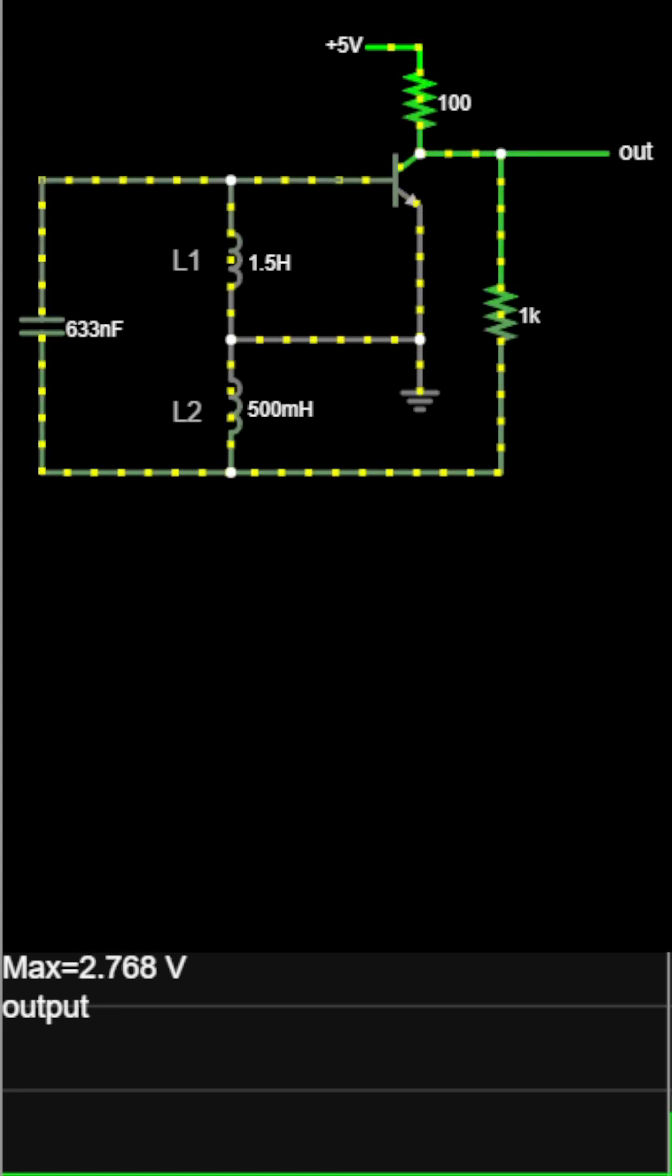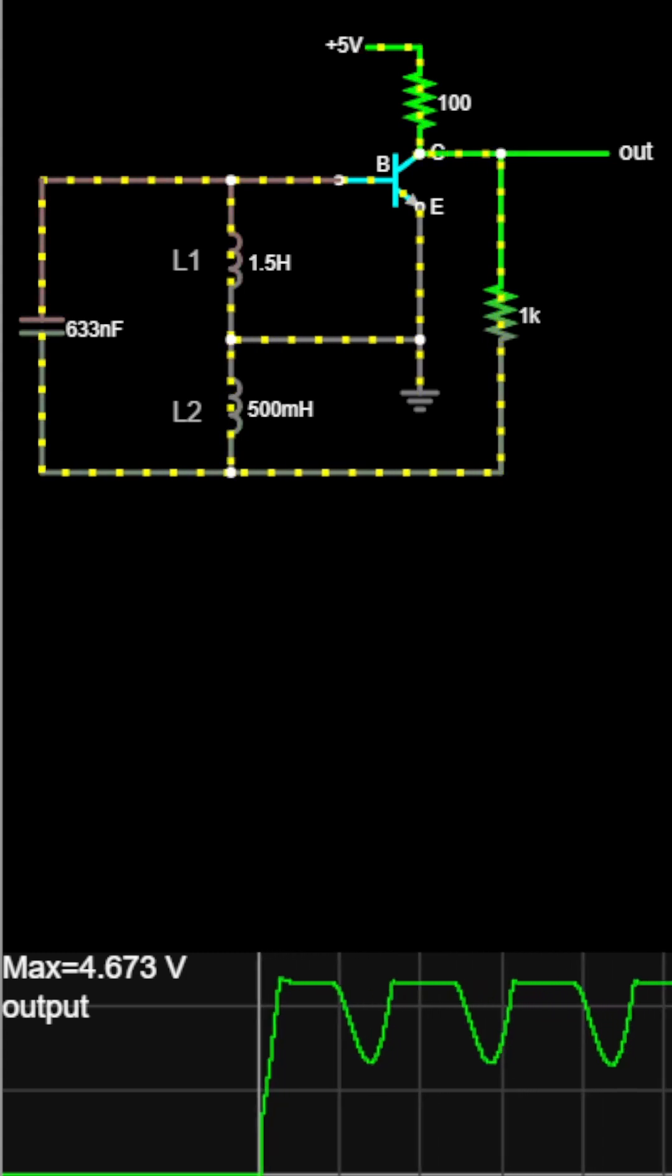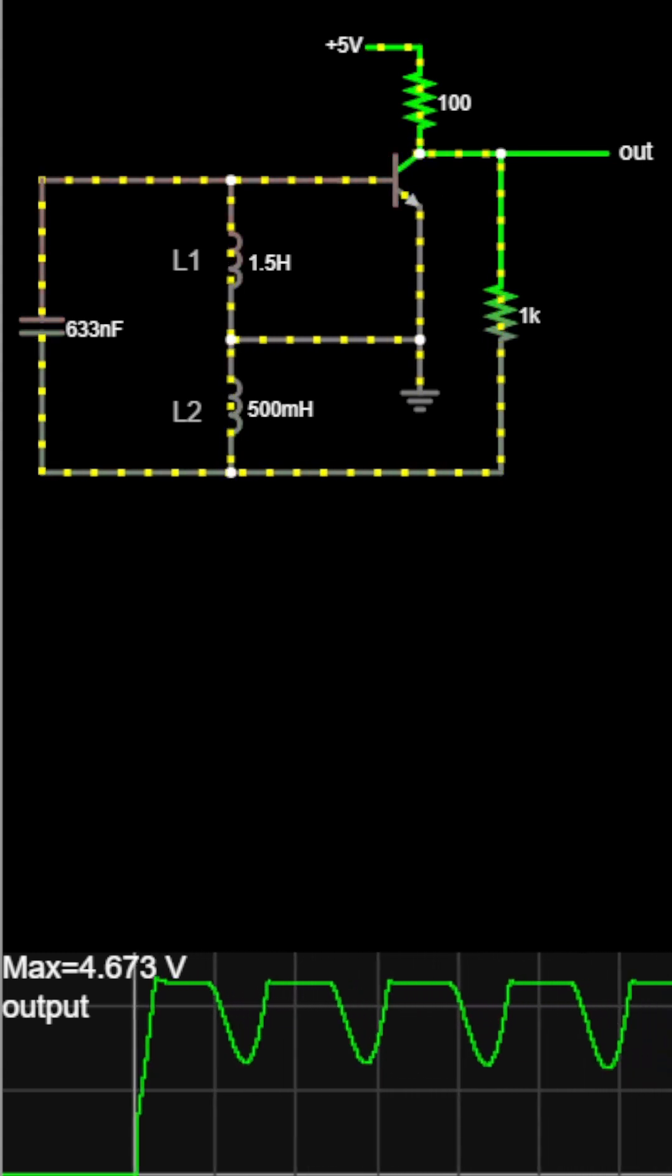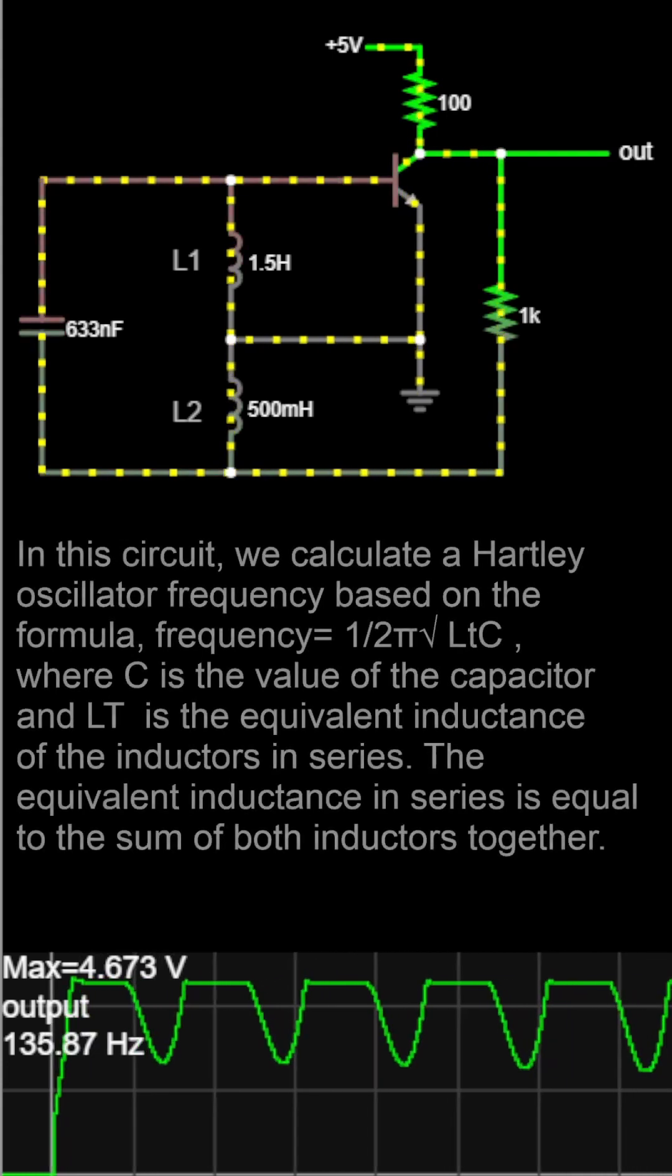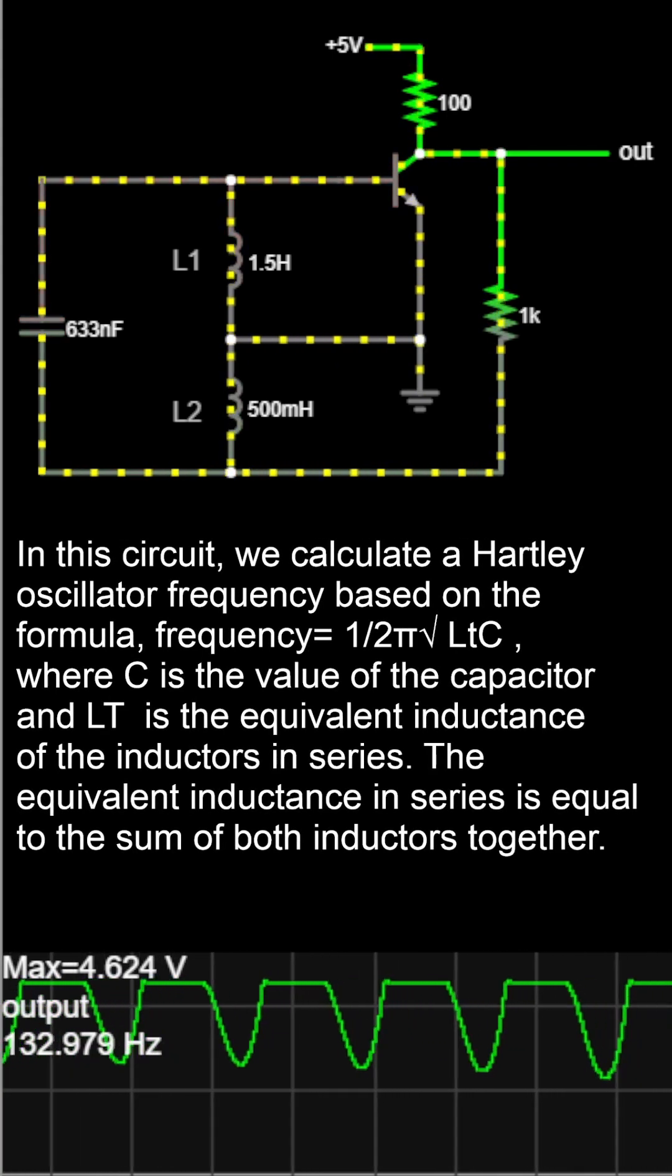This is a Hartley oscillator, an oscillator that uses an LC circuit combined with a transistor for feedback. With the transistor removed, the capacitor and two inductors form a resonance circuit. Current moves back and forth as the capacitor charges and discharges through the inductors. The transistor amplifies this oscillation and prevents it from dying out.